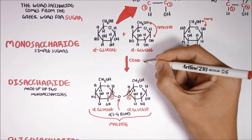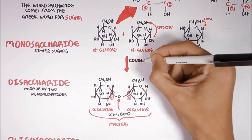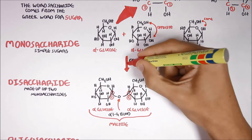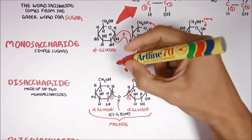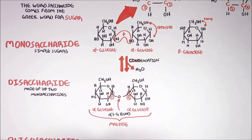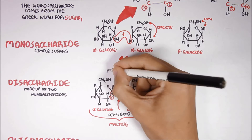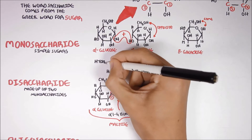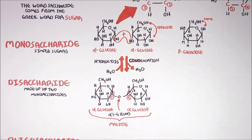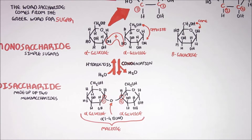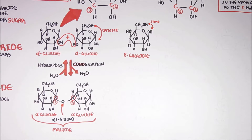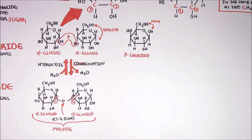The process of linking monosaccharides with one another is called condensation, and here water is released. Therefore the reverse reaction is hydrolysis, where we add water. Adding water to an alpha-1,2,4 glycosidic bond will break the bond. So maltose is only one example of a disaccharide.